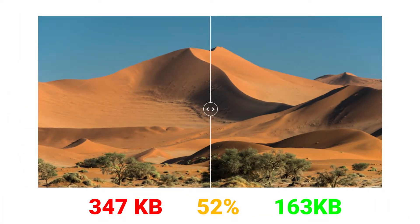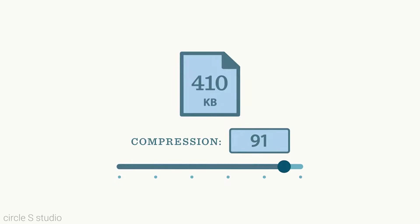Here's an example. On the left is the original at 347 kilobytes. The picture on the right has a 52% reduction in size, bringing it down to 163 kilobytes. As you can see, there is no discernible difference in appearance despite the significant reduction in file size. However, different compression levels can affect the quality of compressed images.